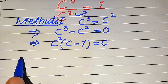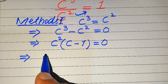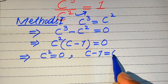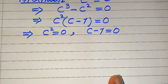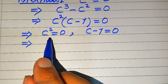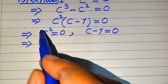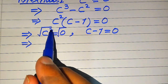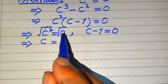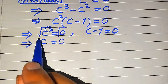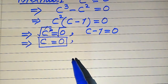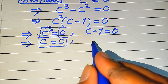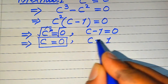After factoring out C squared, we get C squared times (C minus 1) equals 0. We divide this into two cases: the first case is C squared equals 0, and the second case is C minus 1 equals 0. For the first case, taking the square root of both sides gives C equals 0. For the second case, moving minus 1 to the right-hand side gives C equals 1.